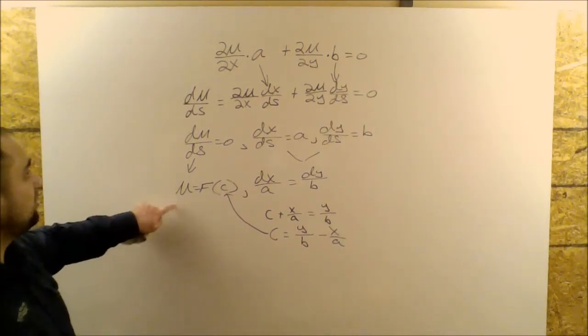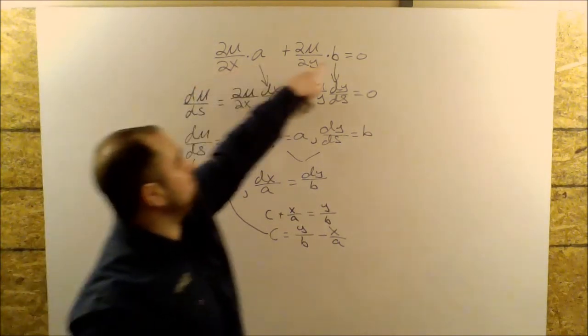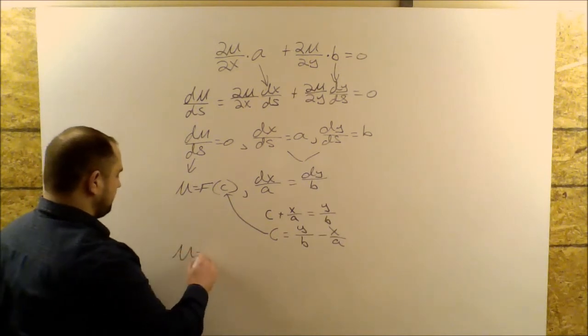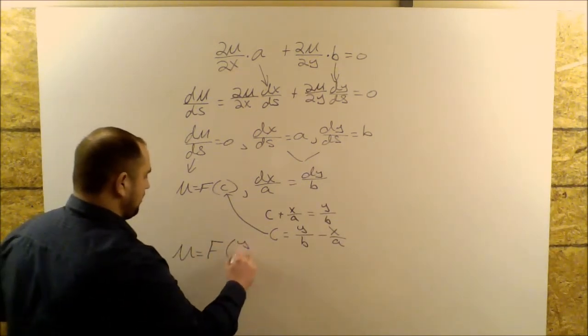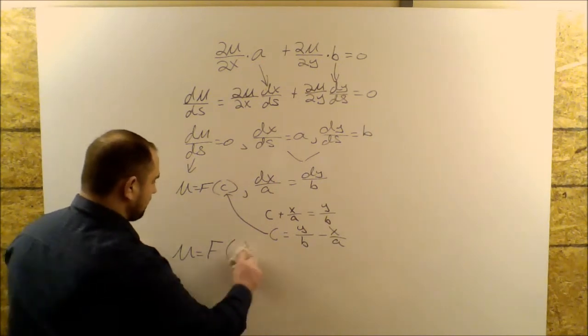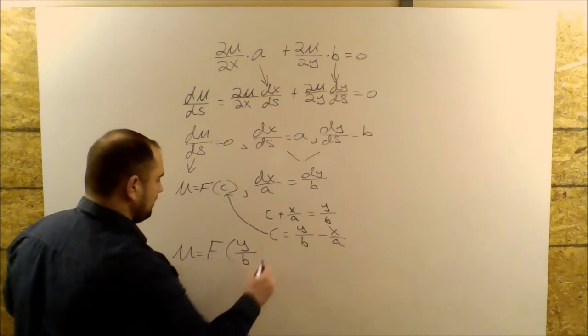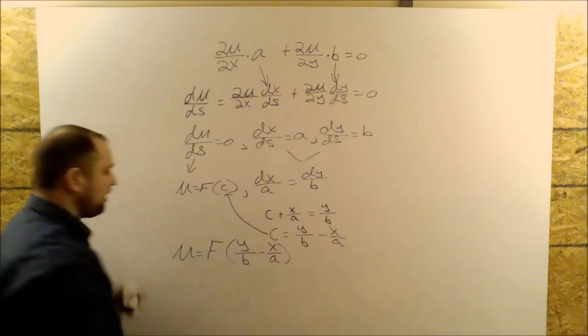So my family of solutions for this PDE, when A and B are constants, would be U is equal to F of Y over B minus X over A.